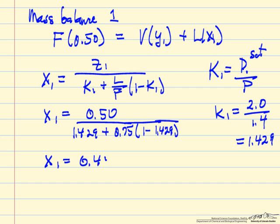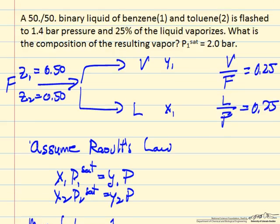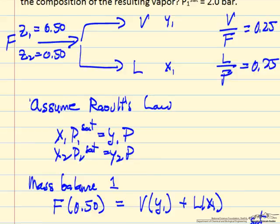So x1 is 0.45, y1 is K1 times x1, y1 is 0.645.